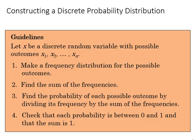If we wish to construct a discrete probability distribution, the following are the guidelines. With x as a discrete random variable with possible outcomes represented by these subscripts x, then the first step is to make a frequency distribution of all the possible outcomes. If there are four outcomes, for instance, we would make frequency distribution for those four outcomes. We find the sum of the frequencies across those classes, and we find the probability of each possible outcome by dividing its frequency by the sum of the frequency. Finally, check that each probability is between zero and one, and that it all sums up to one.